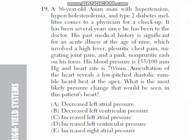A 56-year-old Asian man with hypertension, hypercholesterolemia, and type 2 diabetes comes to the physician for a checkup. It has been several years since he has been to the doctor. His past medical history is significant for an acute illness at age 9 which involved a high-grade fever, chest pain, migratory joint pain, and pink non-pruritic rashes on the torso. His blood pressure is 150/100 mmHg and heart rate is 70 per minute. Auscultation of the heart reveals a low-pitched diastolic murmur best heard at the apex.